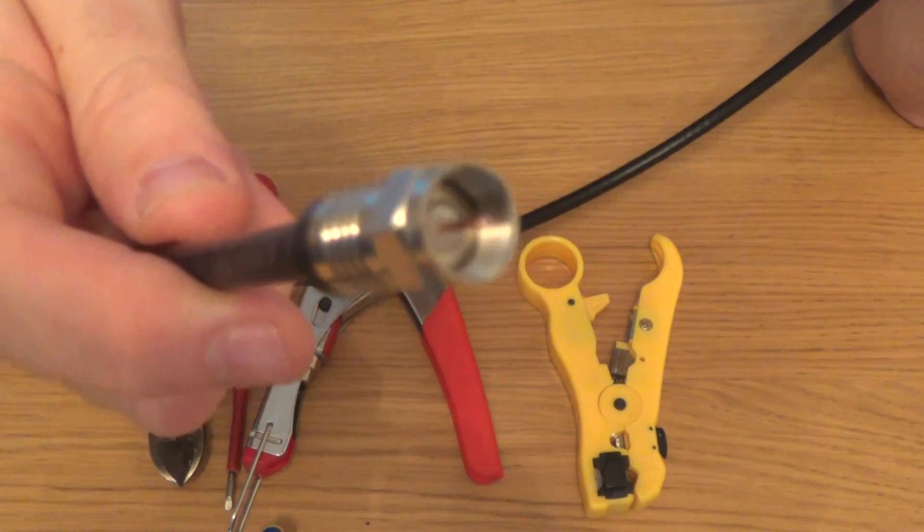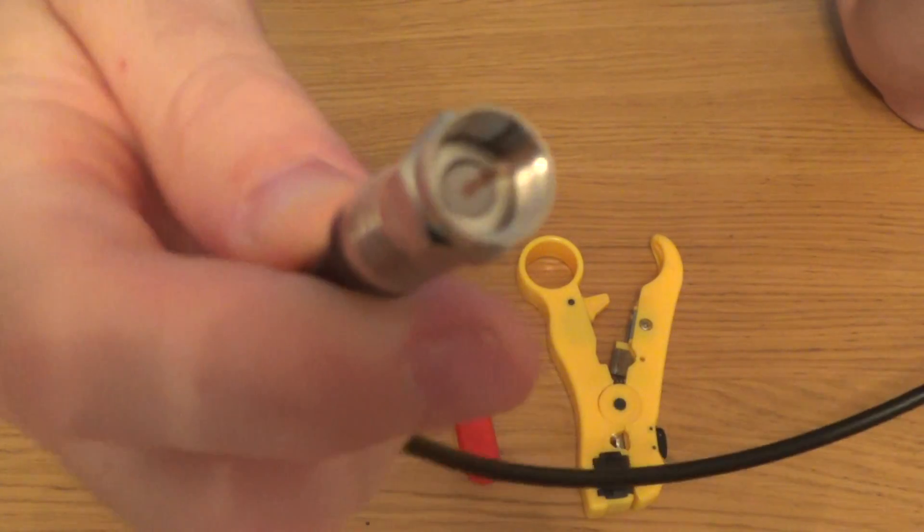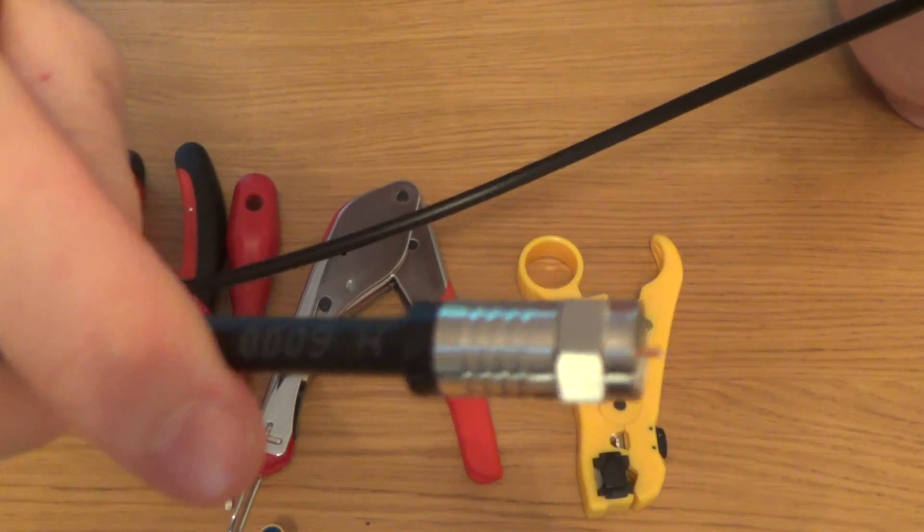Hi there, my name's Vince from mymatevince.com and in this video today I'm going to show you how you can crimp on your own F-type connectors onto coaxial cable.